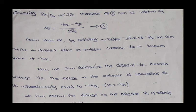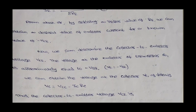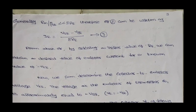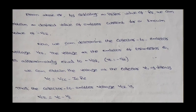By selecting a proper value of Re, we can obtain a desired value of emitter current for a known value of Vee minus Vbe. Now we can determine the collector to emitter voltage VCEQ. Since Ie approximately equals Ic, we already have the collector current ICQ. The voltage at the emitter of transistor Q1 is approximately equal to minus Vbe. We obtain the collector voltage VC as: VC equals VCC minus IC·RC.